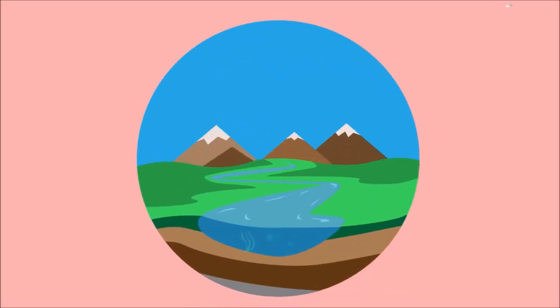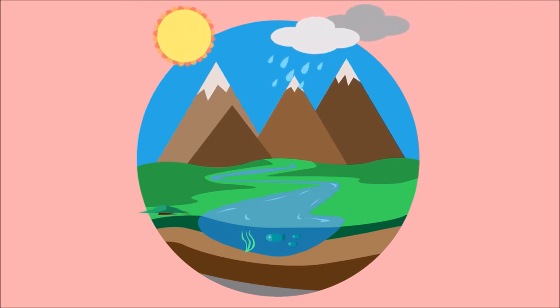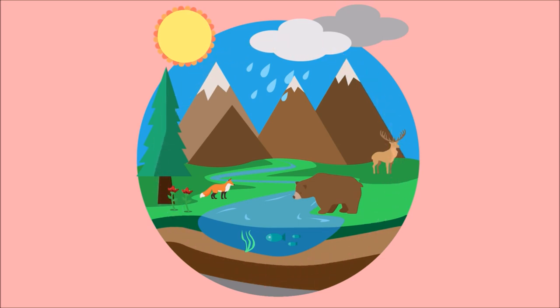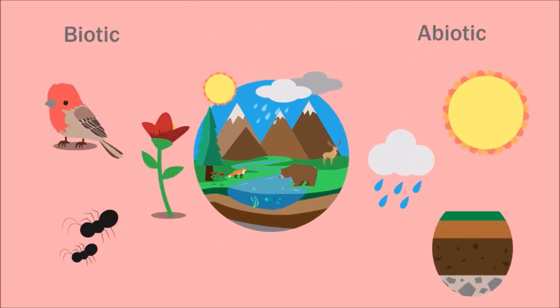Ecosystems are large, often highly complex areas of our environment. In today's video we will be discussing some of this complexity as it relates to how different aspects of an ecosystem interact with one another. As we discussed in a previous video on ecosystem components, ecosystems are composed of both biotic or living and abiotic or non-living components. Let's start by discussing the abiotic parts of an ecosystem.